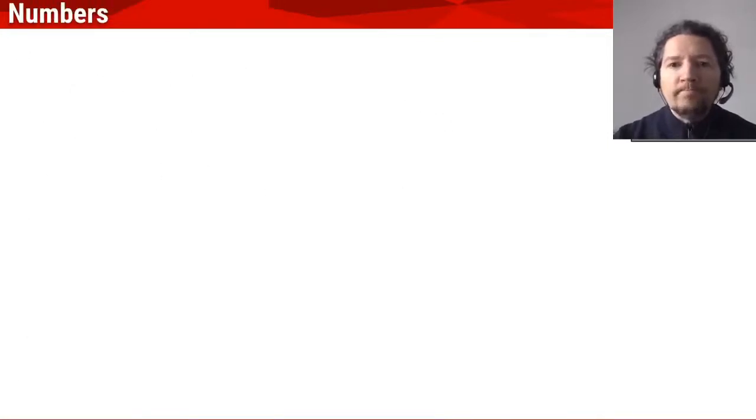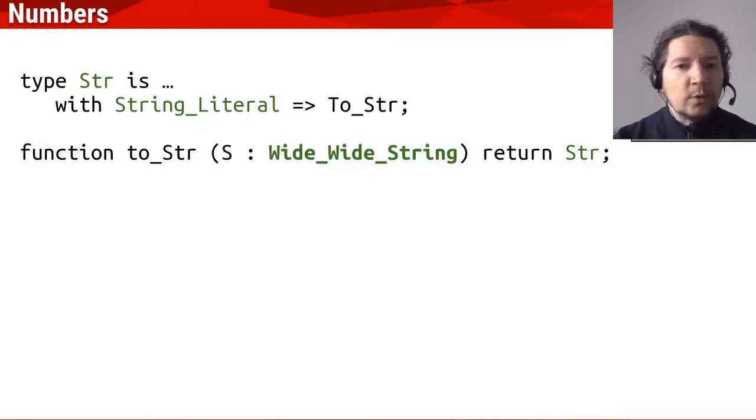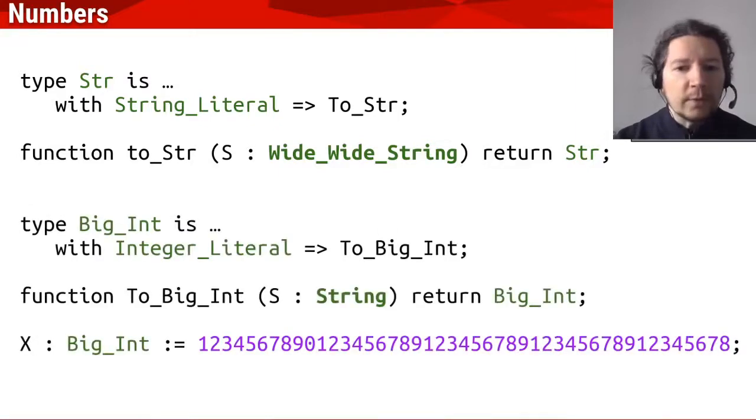And well, just like we saw for initializing strings, the first thing that we can clear is that we can do the same for numbers. And I think part of the reasons behind this is that the new big number library, which is a standard package in Ada 2022, needs something like this, so variables can be initialized without using explicit conversions.